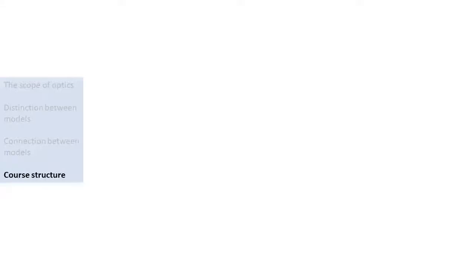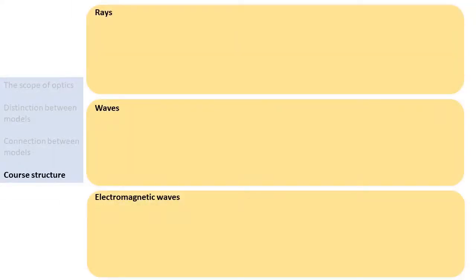So in this course, we are going to discuss optics. As we just saw, optics has many different aspects, which can in one sense be considered as separate from each other, yet in another sense they are closely interconnected. So how are we going to treat these different topics in a clear and coherent manner? Broadly speaking, we can distinguish three models of light: the ray model, the wave model, and the electromagnetic field model.